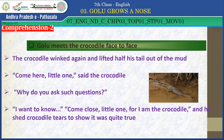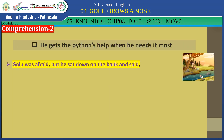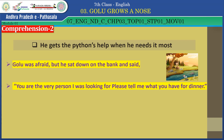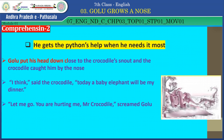Golu was afraid, but he sat down on the bank and said, 'You are the very person I was looking for. Please tell me what you have for dinner.' The crocodile said, 'Come here, little one, and I will whisper the answer to you.' Golu put his head down close to the crocodile's snout, and the crocodile caught him up by the nose. 'I think,' said the crocodile, 'today a baby elephant will be my dinner.' 'Let me go — you are hurting me, Mr. Crocodile!' screamed Golu.